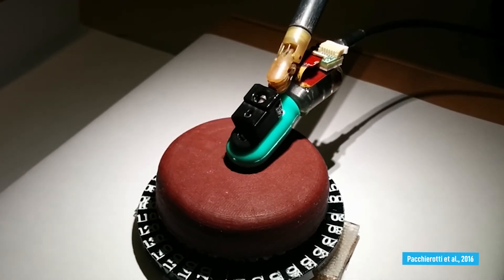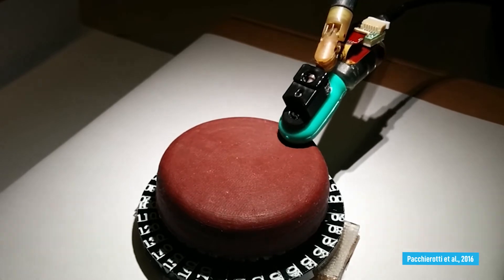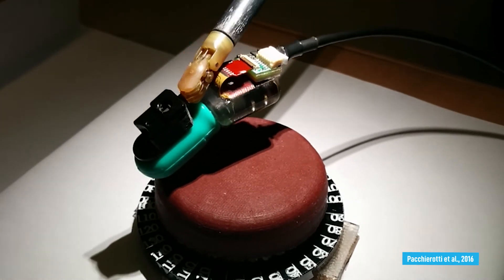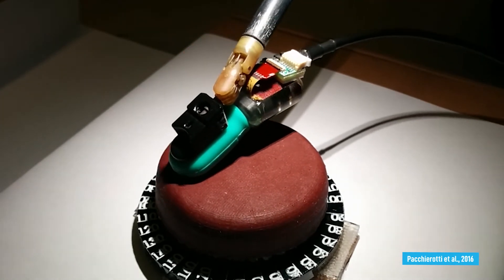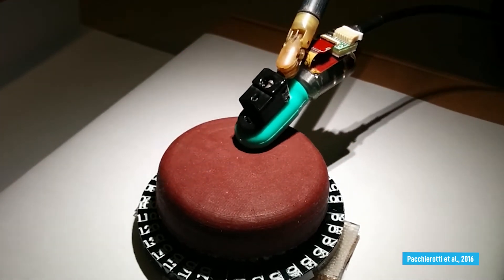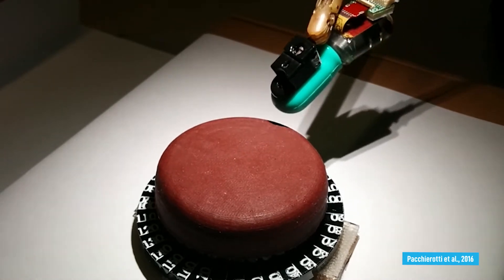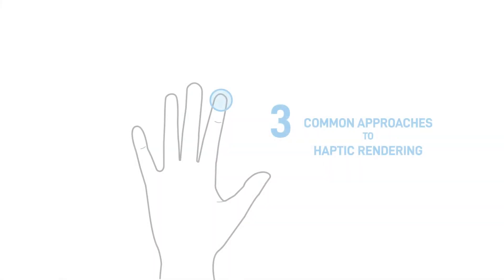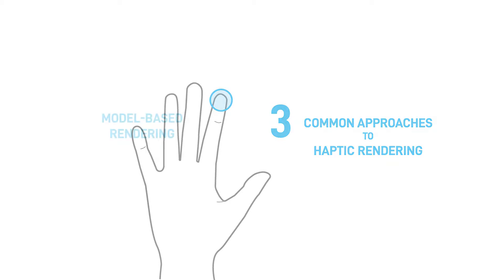The resulting application used skin deformation to render the tissue compliance. In addition, they rendered the feel of the surgical tool moving on the surface through vibrations. To create and render haptic sensations, there are at least three approaches that hapticians commonly use.